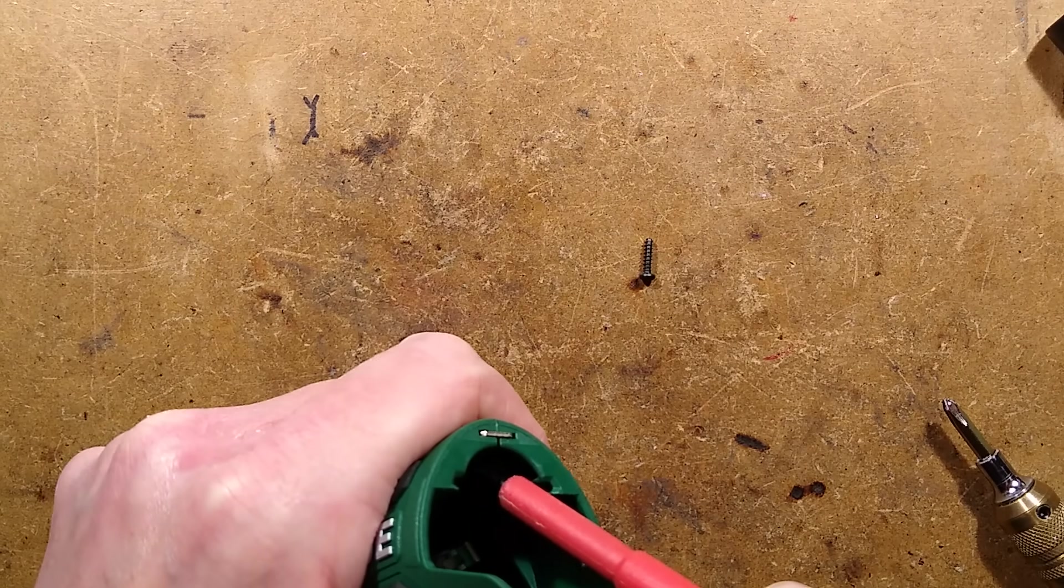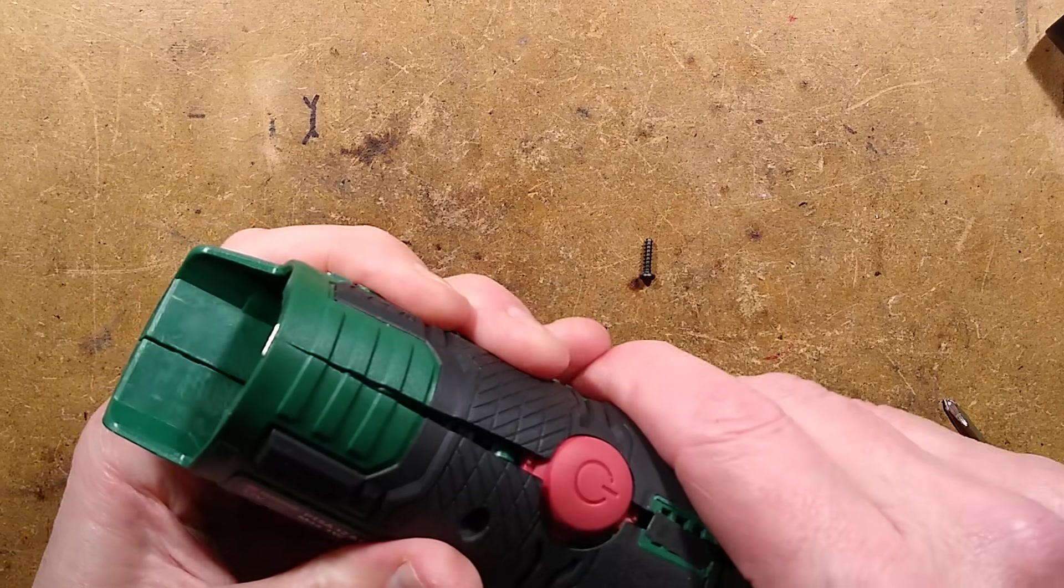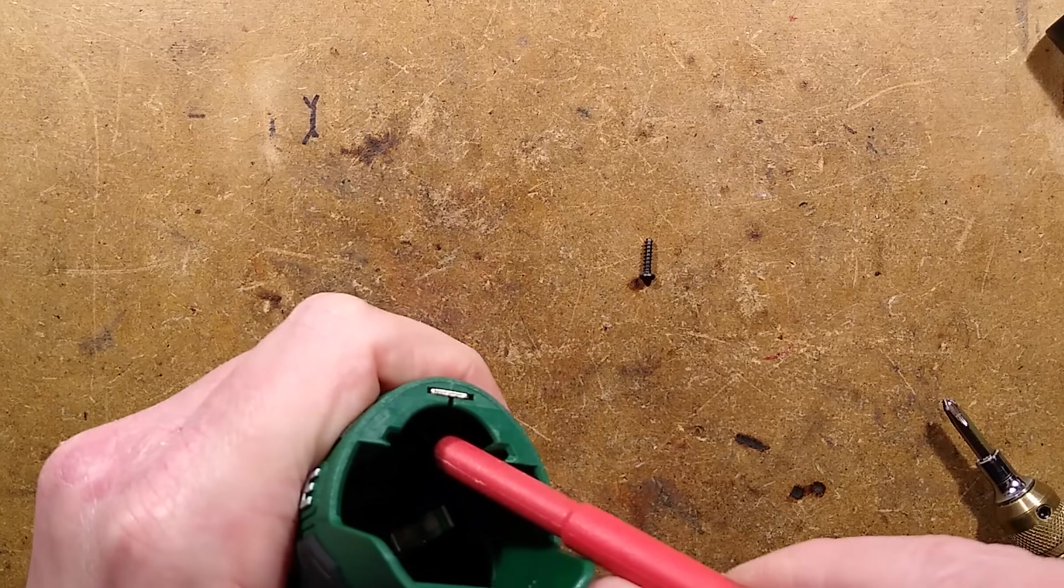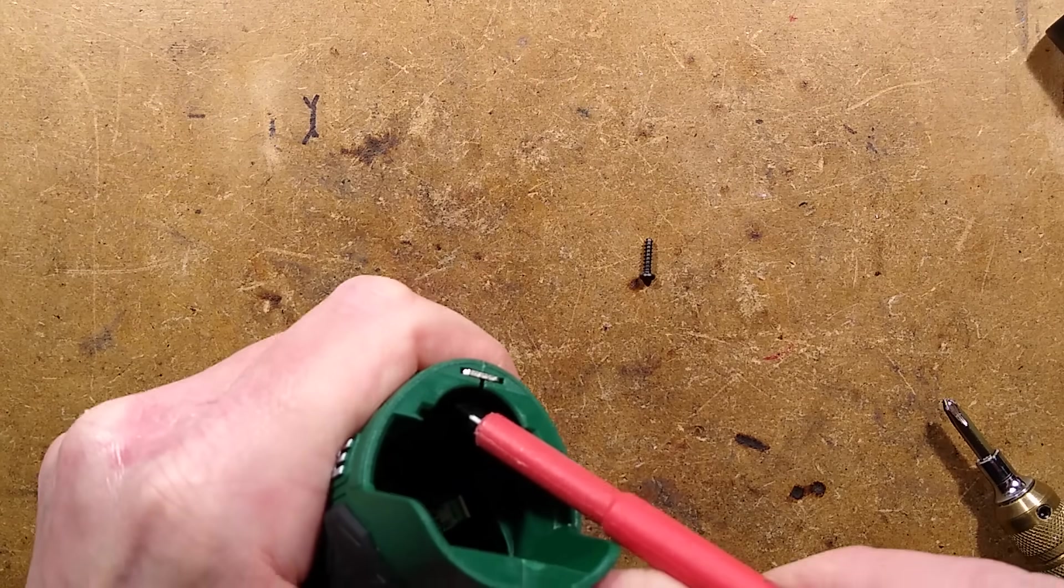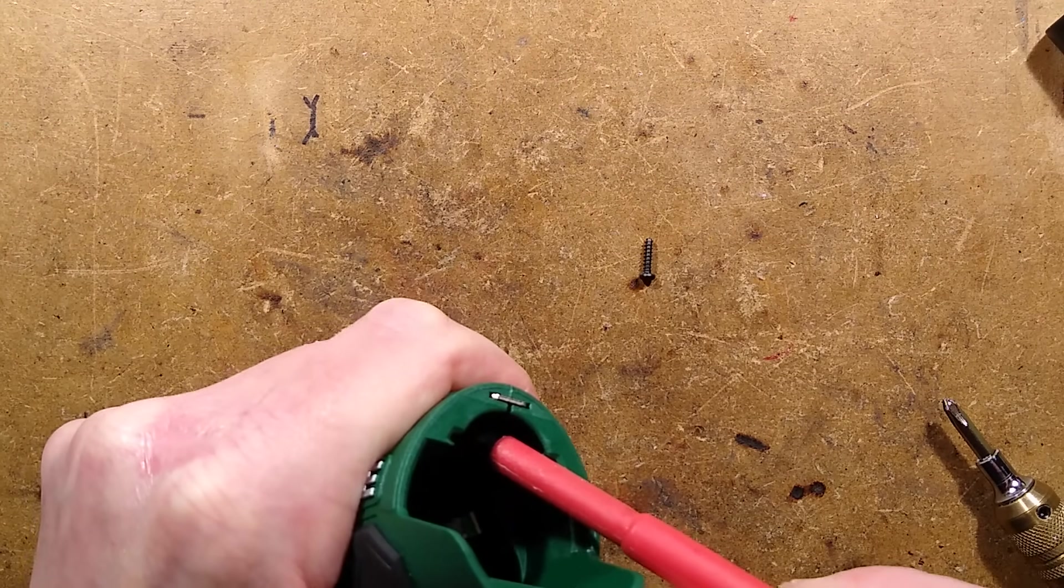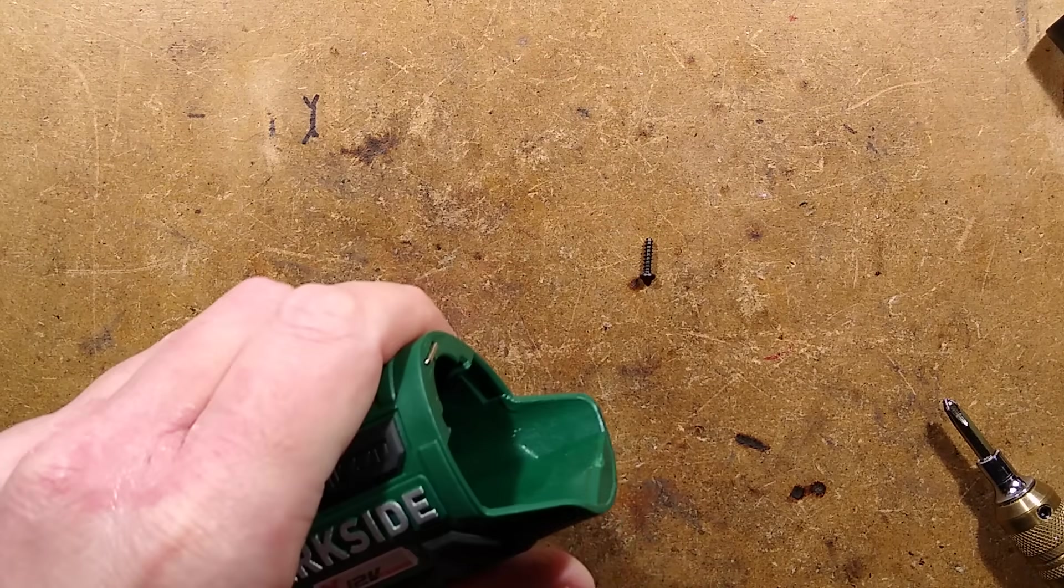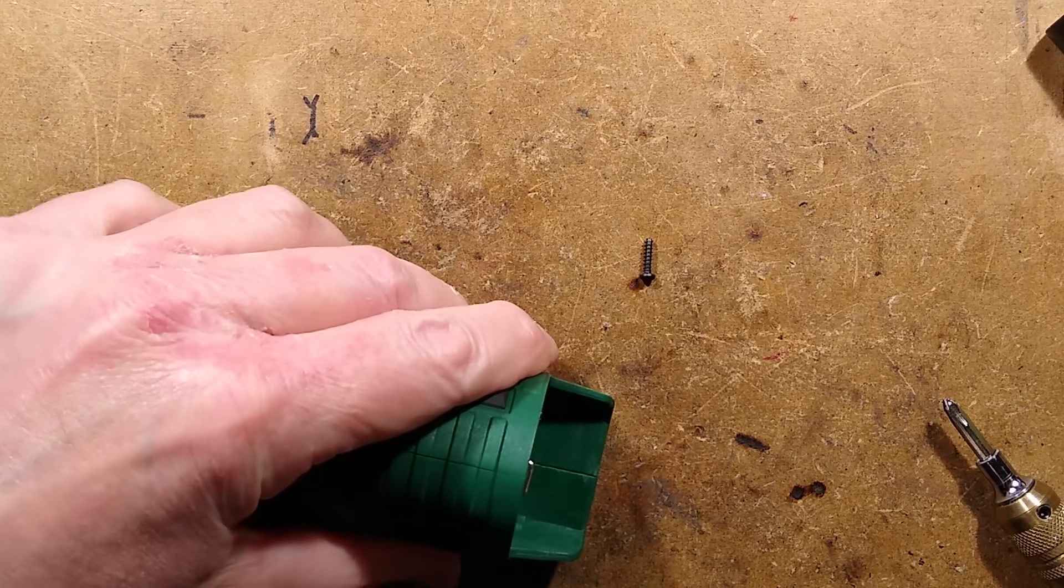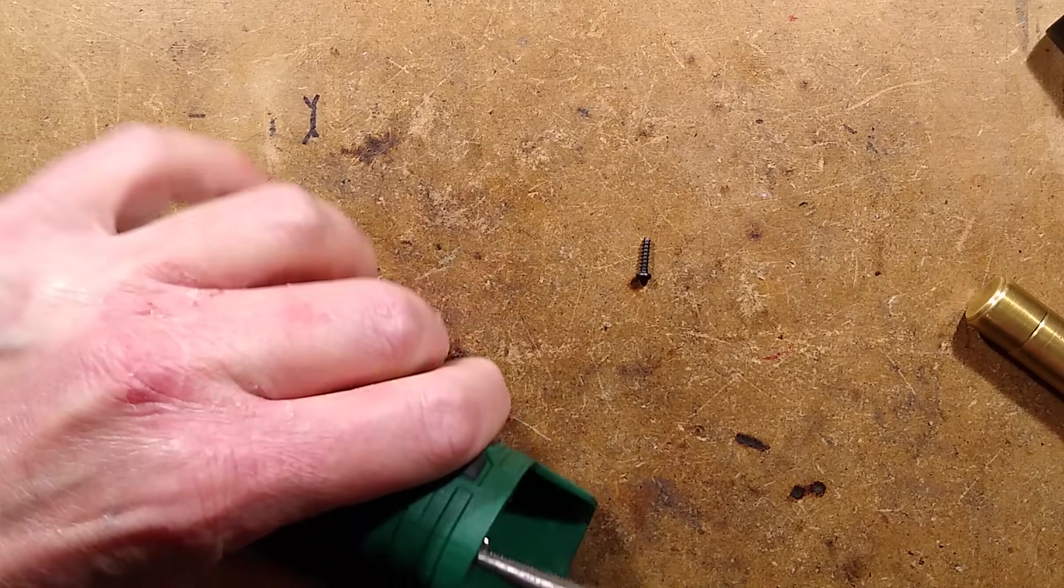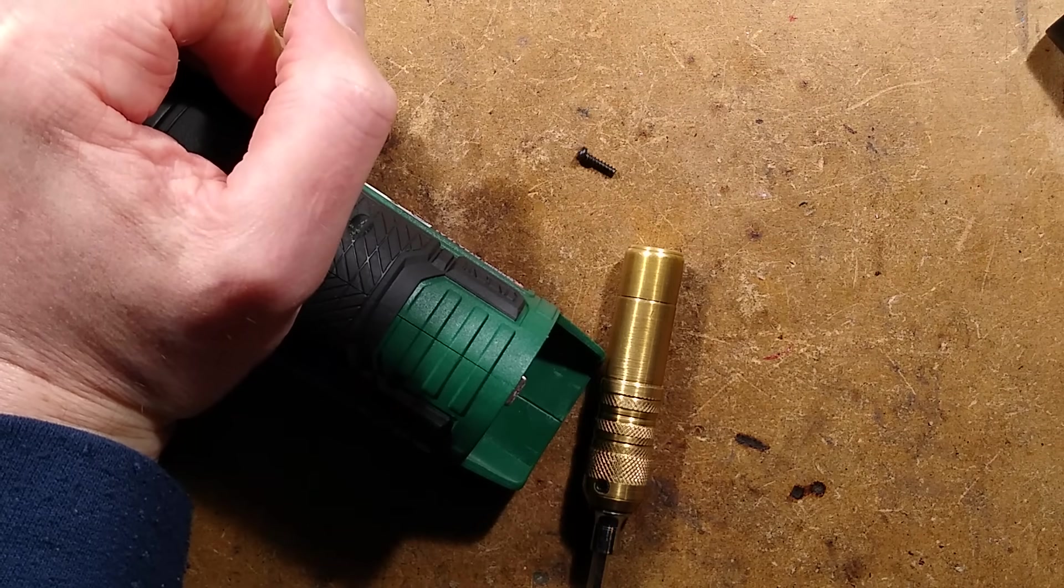It does look as though it's kind of splayed out, so I wonder if there's a locking mechanism. This does look as though it's in quite tight. Long nose pliers. Let's grab it and pull it. This is not coming out easily. Let's try beefier pliers.